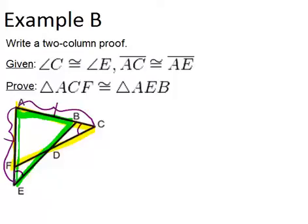So far what we know is one pair of angles and one pair of sides that are congruent. Because the triangles are overlapping, they actually share an angle. They each have angle A.